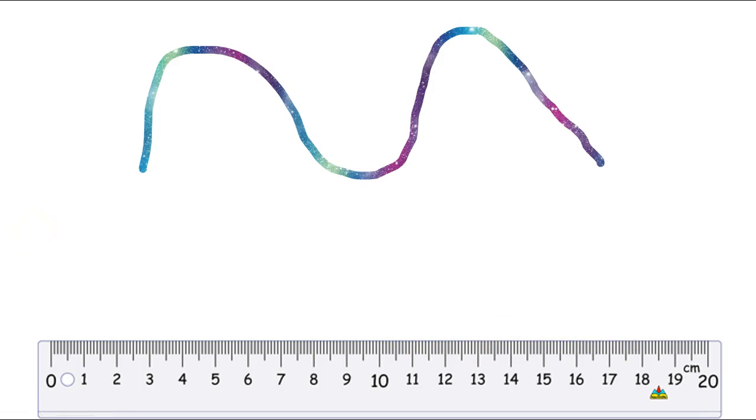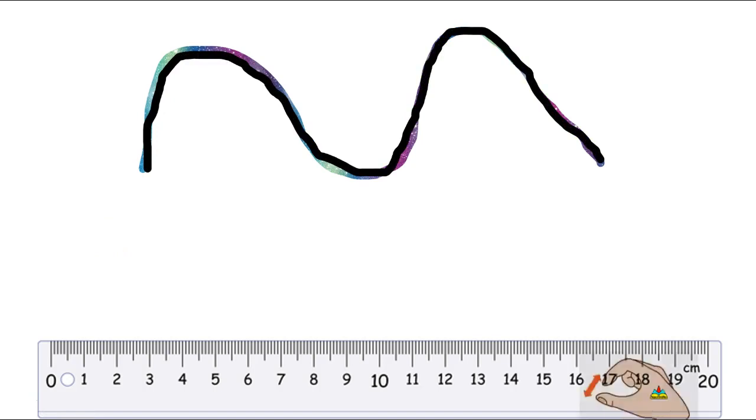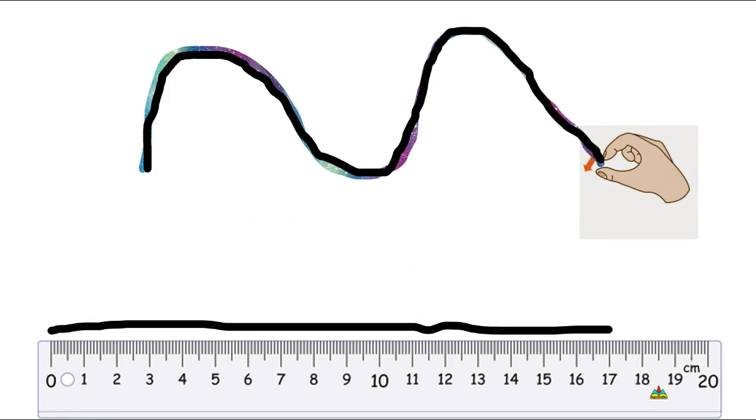Let's lay a string on our zigzag here. Remember we need to start at the end here. So let's put our string there. Then what I can do is I can pinch the end of my string where it ends on the zigzag line. And I need to straighten out my string. And the measurement I got was 17, 17 centimeters.